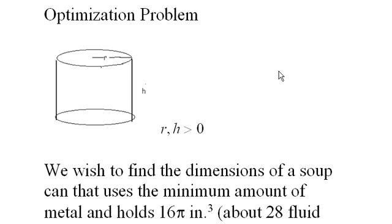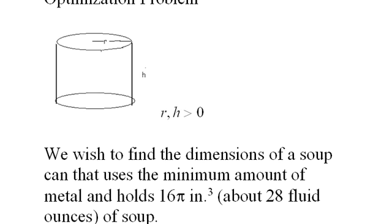Optimization problem. We wish to find the dimensions of a soup can that uses the minimum amount of metal and holds 16π cubic inches of soup. That's about 28 fluid ounces of soup, as we can see here.